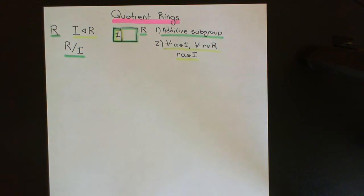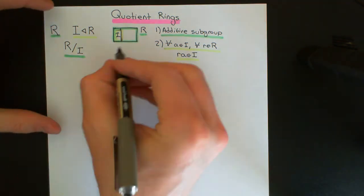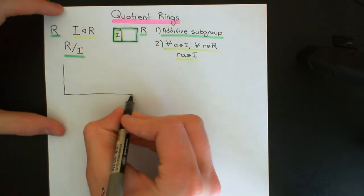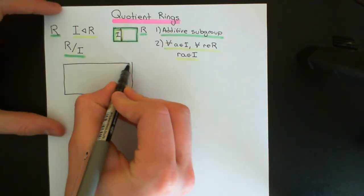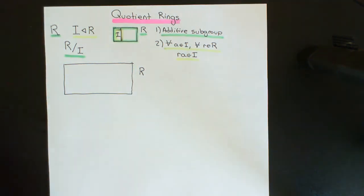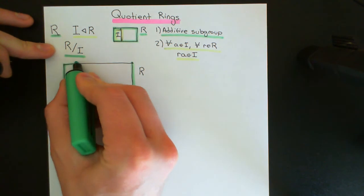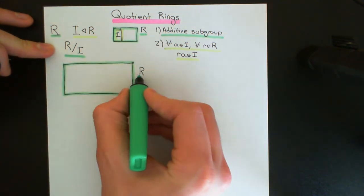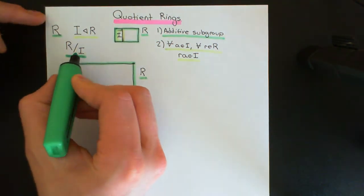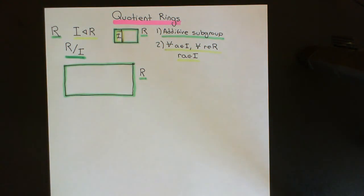I'm going to start by reminding you how you actually form an additive quotient group. Here is my commutative ring again coloured in green, and here is the ideal marked on it. What we want to understand first and foremost is what the elements of our quotient ring are going to be. They are in fact going to be the cosets of the ideal under addition — the additive cosets.